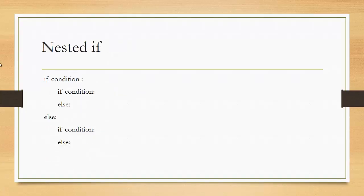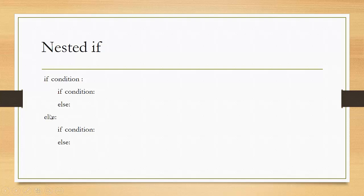Now next is nested if. In nested if, you first need to learn the concept of inner block and outer block. Here in the syntax: if, then condition, then colon — inside this if block you can again write if-else or a simple if statement, whatever is required by your program. You can repeat the same thing for the else block also. This is the concept of nested if. The portion inside the if-else is known as the inner block, and the outer if condition and else is considered the outer block.